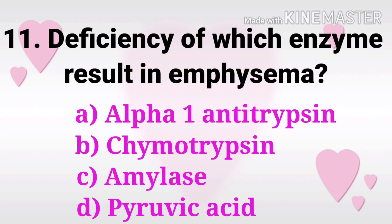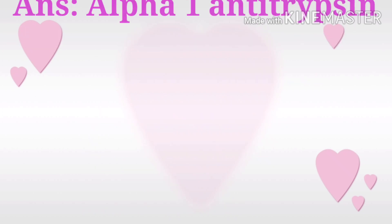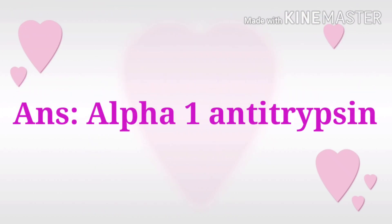Question 11: Deficiency of which enzyme results in emphysema? The options are alpha-1-antitrypsin, chymotrypsin, amylase, and pyruvic acid. The answer is alpha-1-antitrypsin.